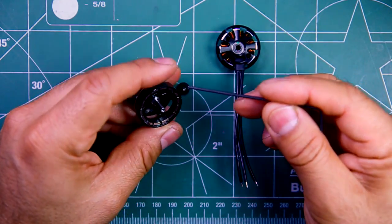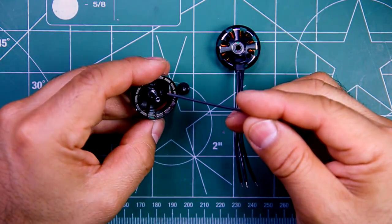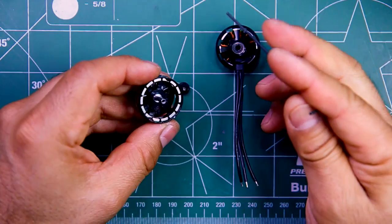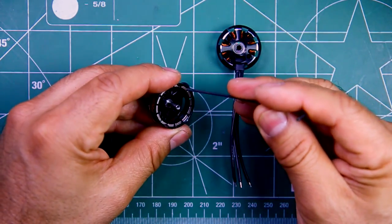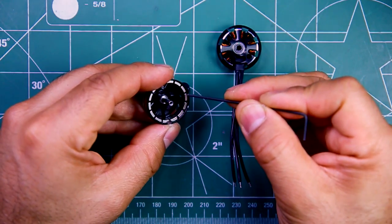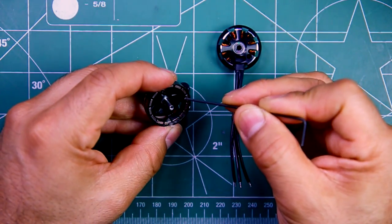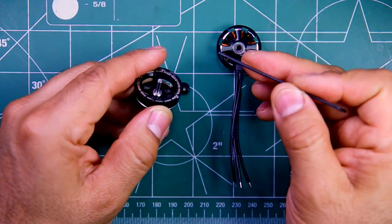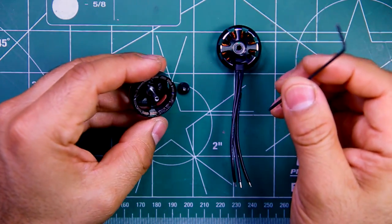As we know, a lot of the new motors coming out, like the Emacs, are using these curved magnets. And actually, that does help in making the motor more powerful.